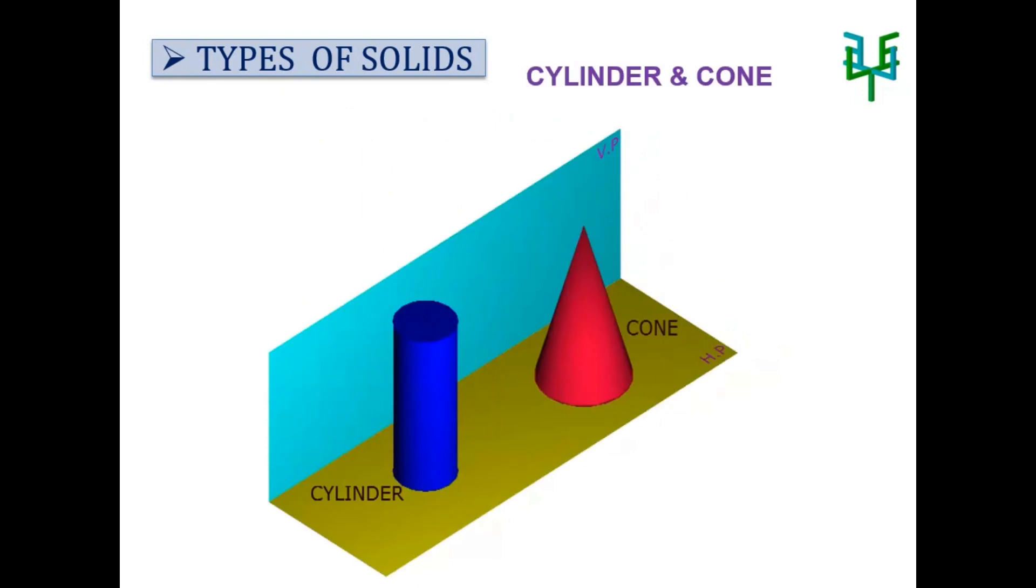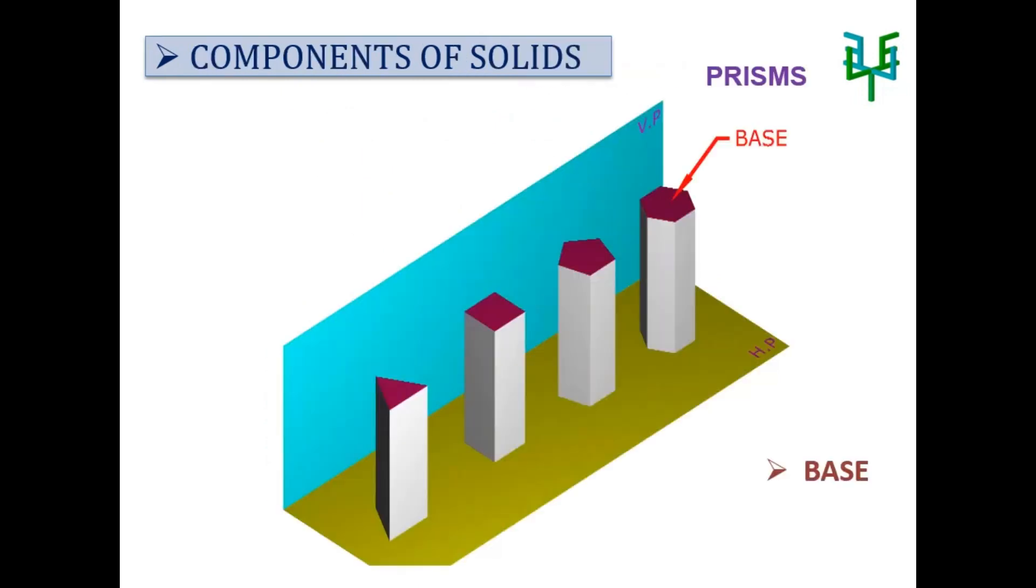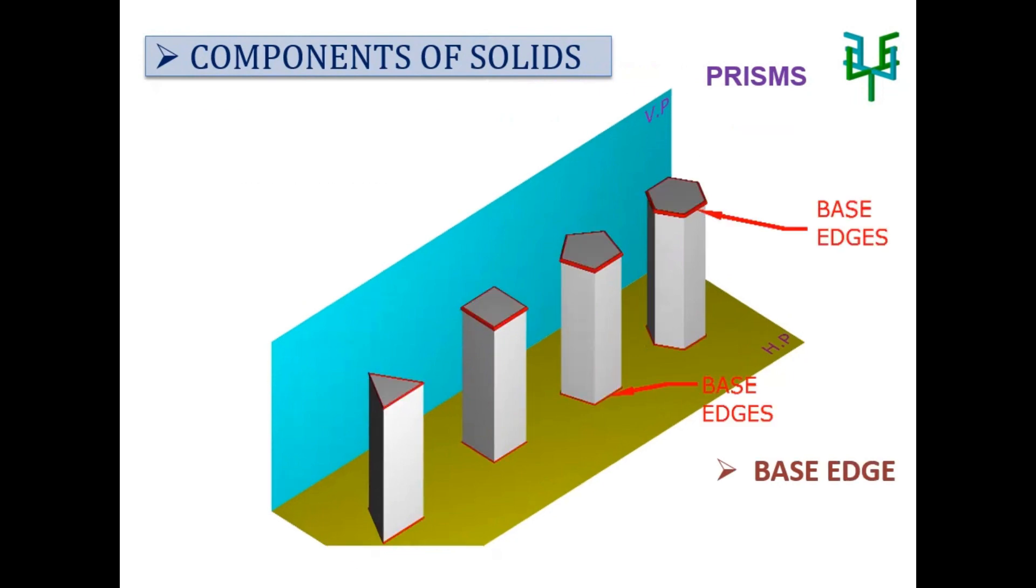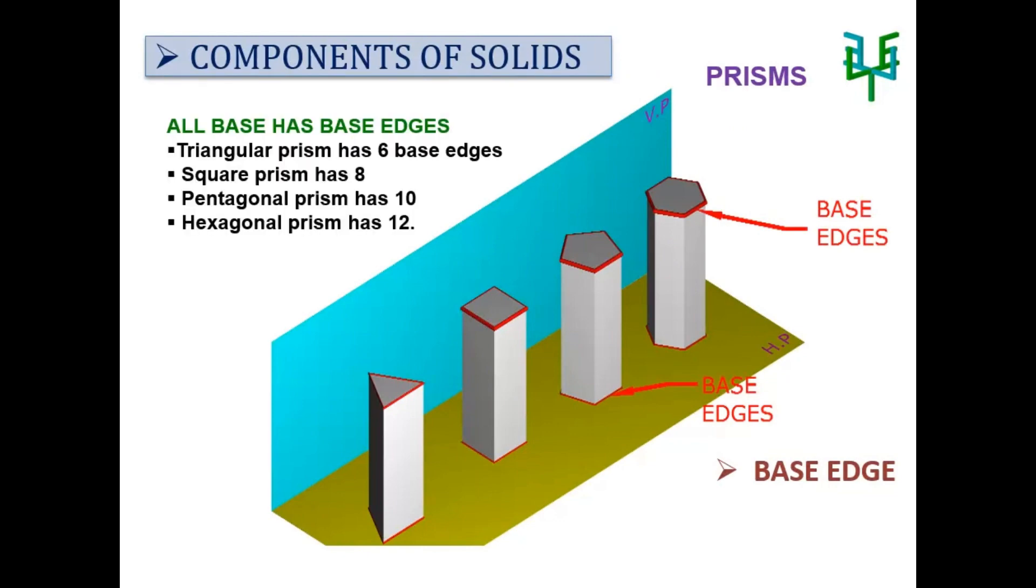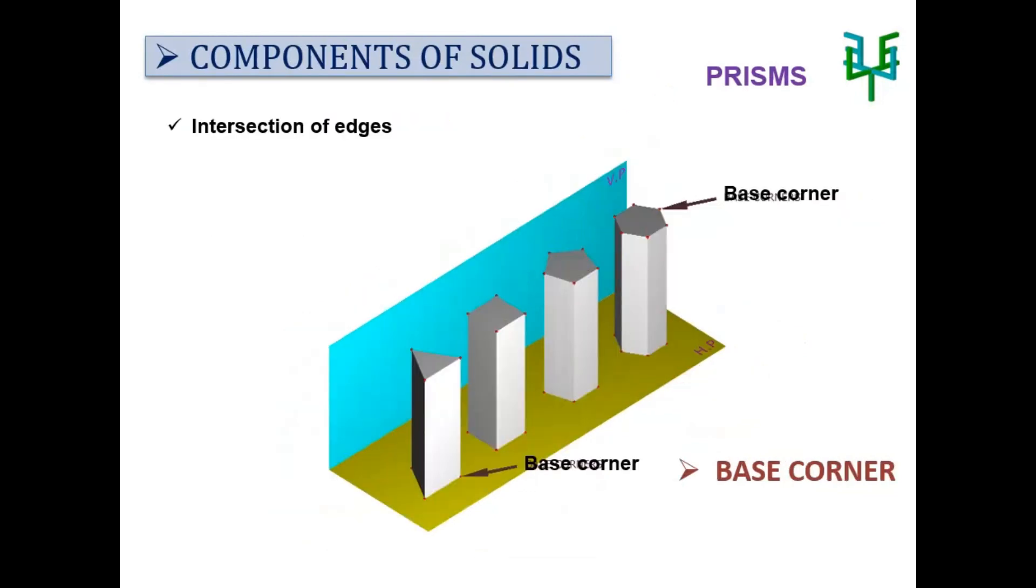Now let's see the components of prism. Base: prisms have two bases, one at the top and one at the bottom. Base edge: the base has base edges. Base corner: it is the intersection of edges.